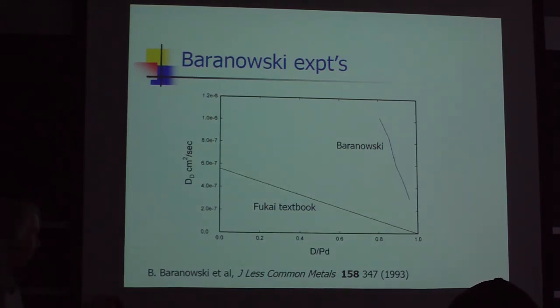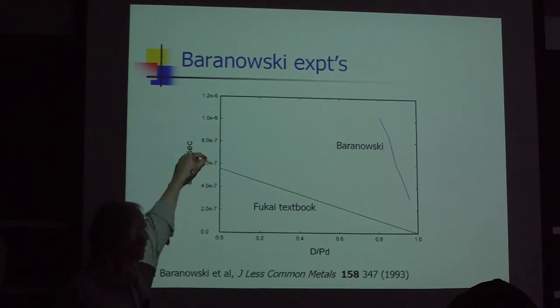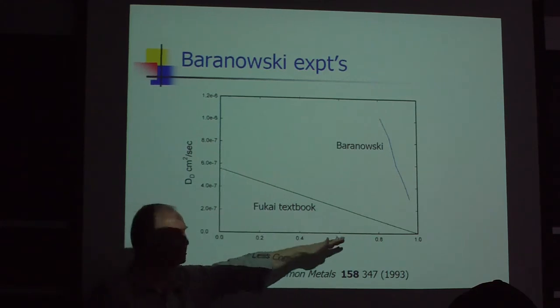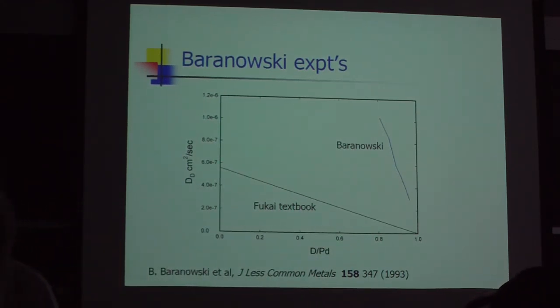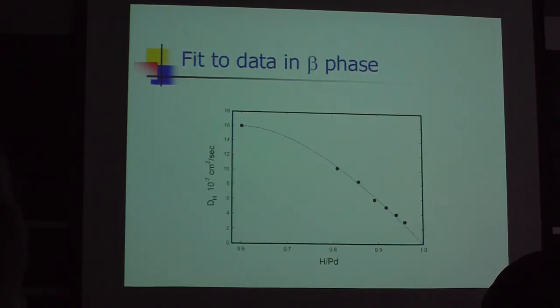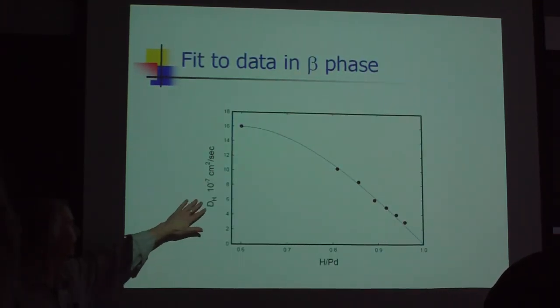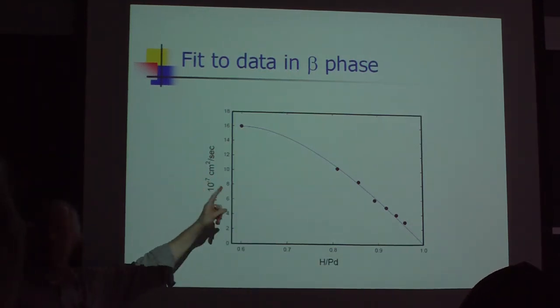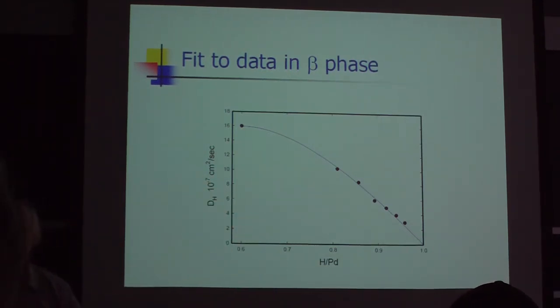So trying to extrapolate across the curve means I didn't finish reading the textbook. If I construct an equivalent diffusion coefficient for hydrogen from Baranowski's data and additional data taken near the miscibility gap region, I might construct a curve that looks something like this in the beta phase.